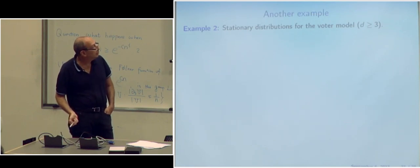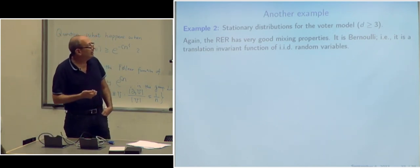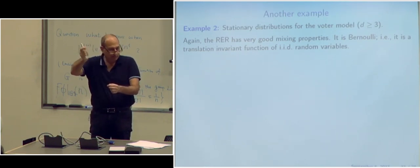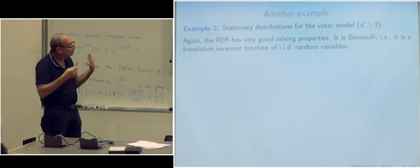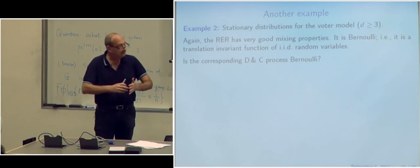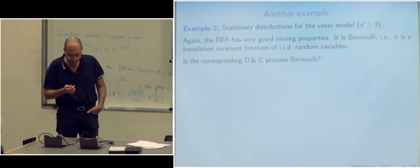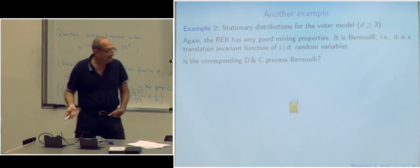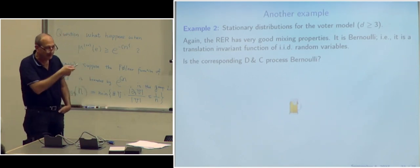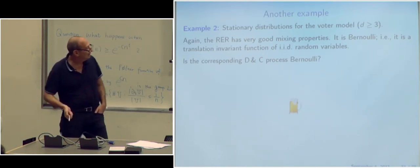Is the stationary distribution for the voter model Bernoulli — can it be expressed as a translation invariant function of IID random variables? That is an open question I would be very interested in answering. If you tell me the answer to that, you get a beer. The small beer in the picture is more a reflection of my skill at making pictures than the size of the beer you would actually receive.